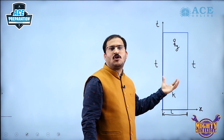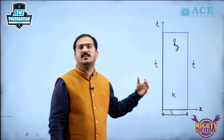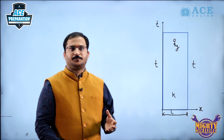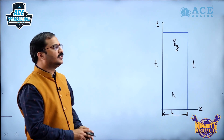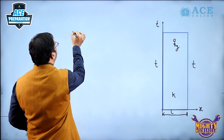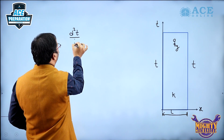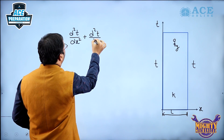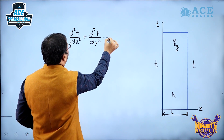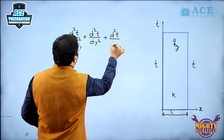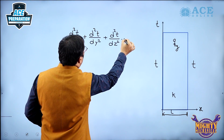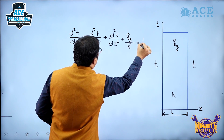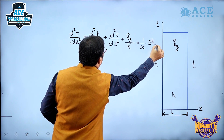We need to see how the temperature distribution will be in this particular wall. For that, we need to consider the general heat conduction equation first. The general heat conduction equation in the Cartesian coordinate system is: d²T/dx² + d²T/dy² + d²T/dz² + qg/k = (1/α) · dT/dτ.